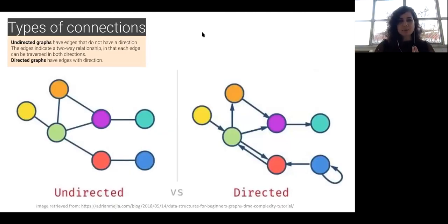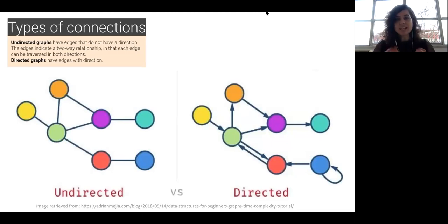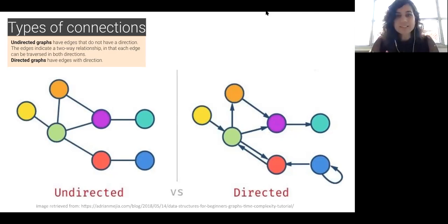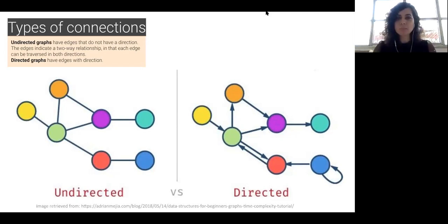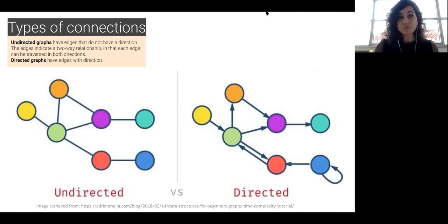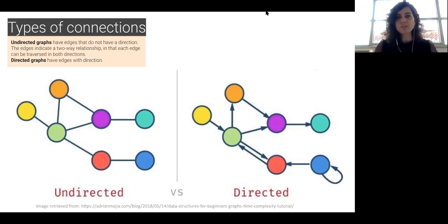These types of connections can be directed or undirected. In directed networks, the edges have a direction — for instance, someone who comments on a post or likes a post. Undirected connections have edges that do not have a direction, indicating a two-way relationship where each edge can be traversed in both directions. That would be the case with co-tag networks, because you have co-relations and there is no direction.